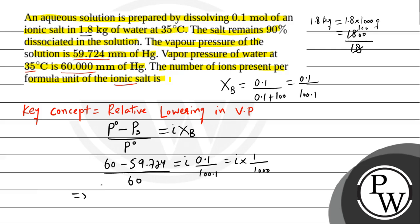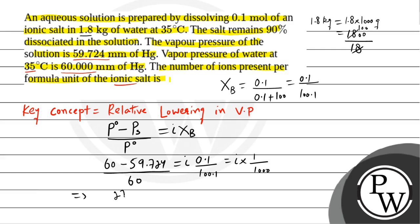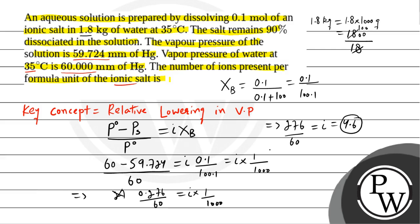So 60 minus 59.724 equals 0.276. Then 0.276 divided by 60 equals i into (1/1000). Solving: 276 divided by 60 equals i. Wait — 0.276 divided by 60 times 1000 gives i. So i factor = (0.276/60) × (100.1/0.1) ≈ 4.6. So the van't Hoff factor i = 4.6.